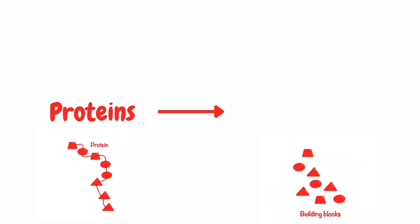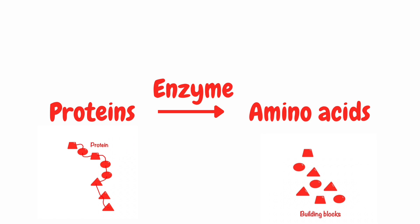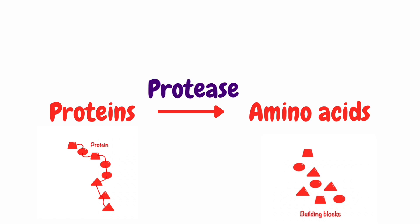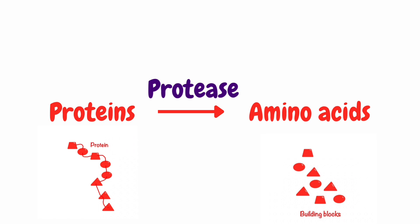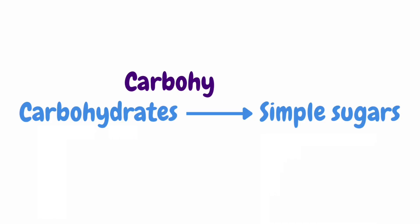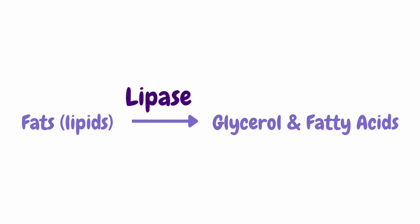Let's look at an example of a reaction carried out by an enzyme. Proteins are broken down into amino acids. We write the word 'enzyme' above the arrow to show that an enzyme is needed but isn't used up in the reaction. Sometimes the scientist will write the name of the specific enzyme instead. You can usually spot enzymes because they end in the sound '-ase'. The enzyme that breaks down proteins is called protease, the enzyme that breaks down carbohydrates is called carbohydrase, and sometimes we call fats lipids — the enzyme that breaks down lipids is called lipase.